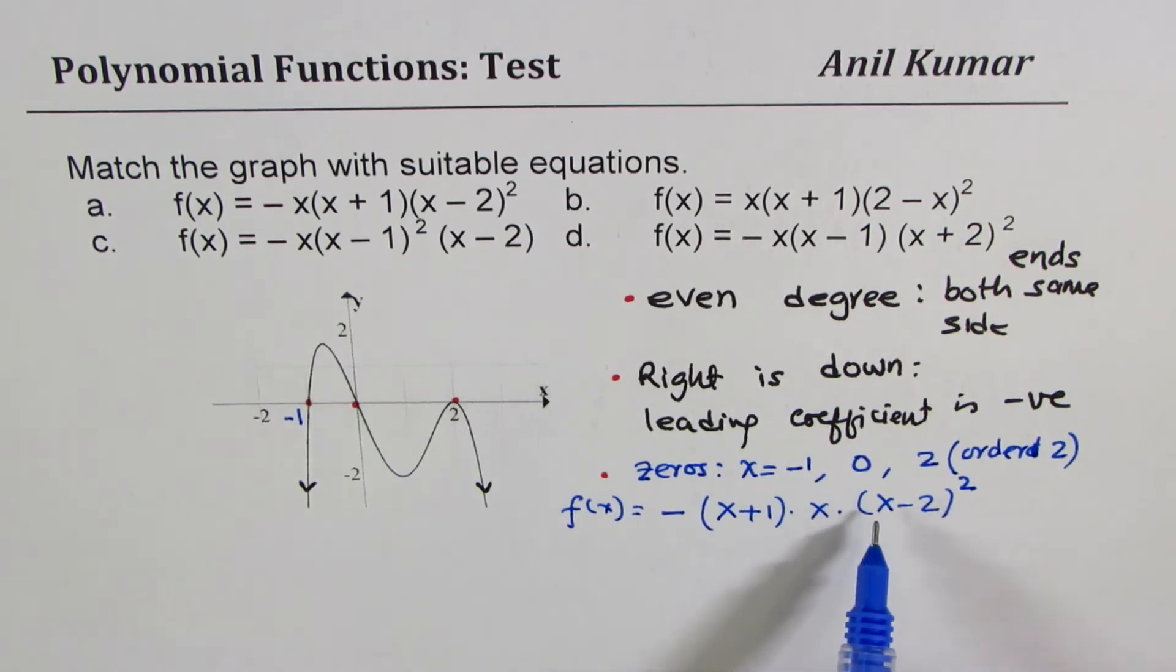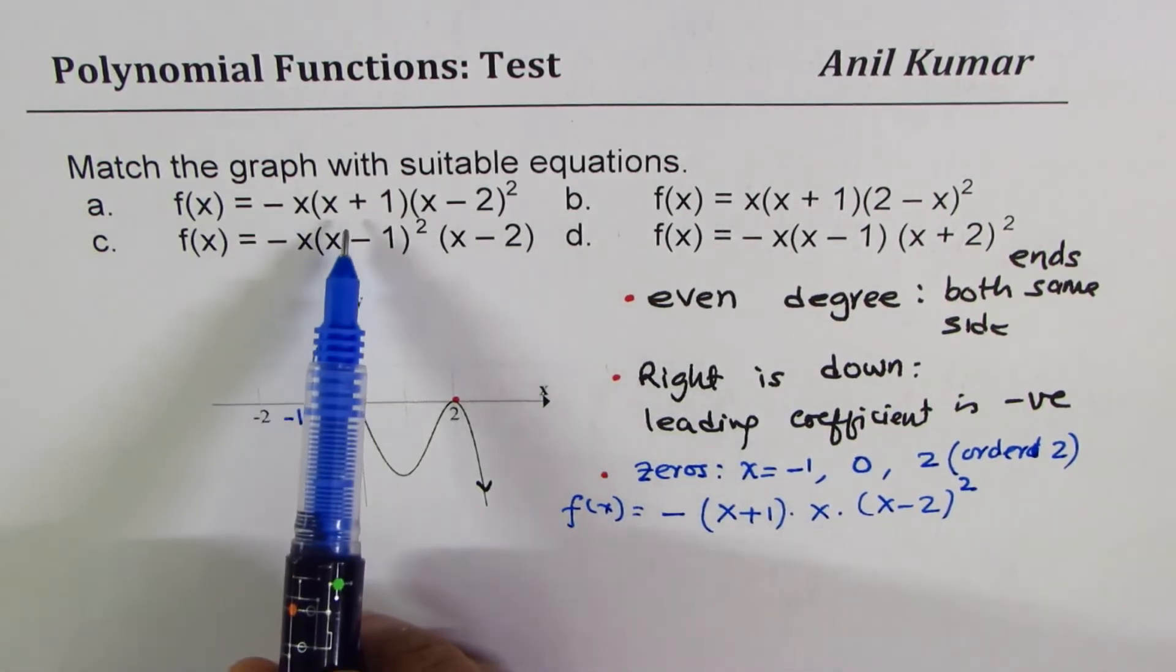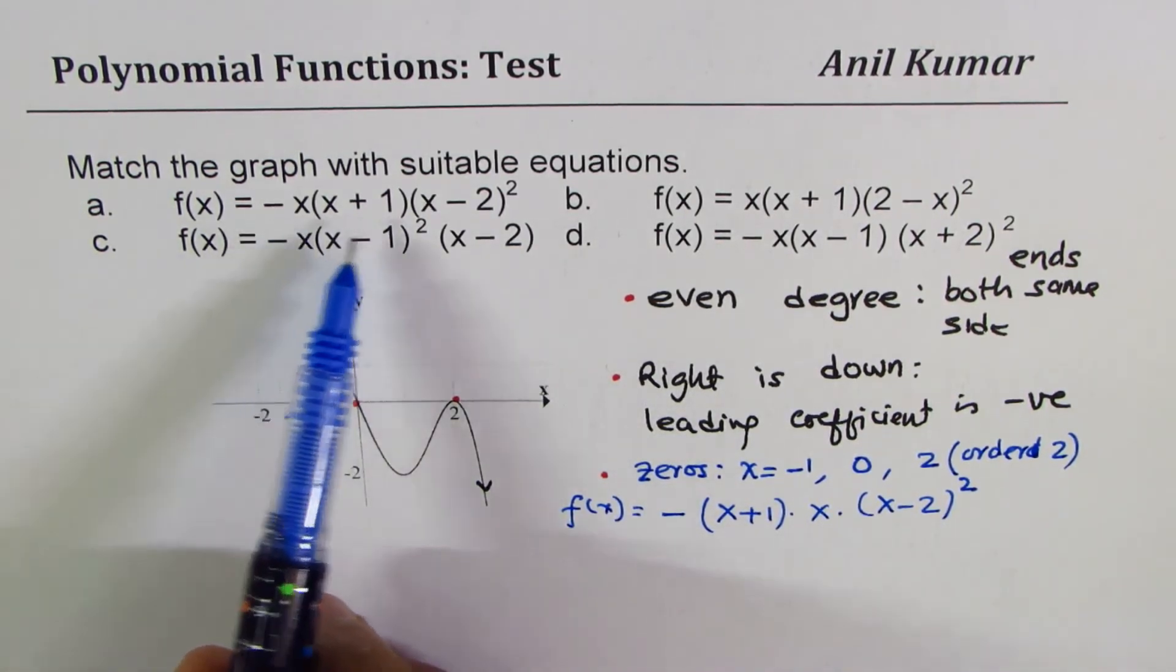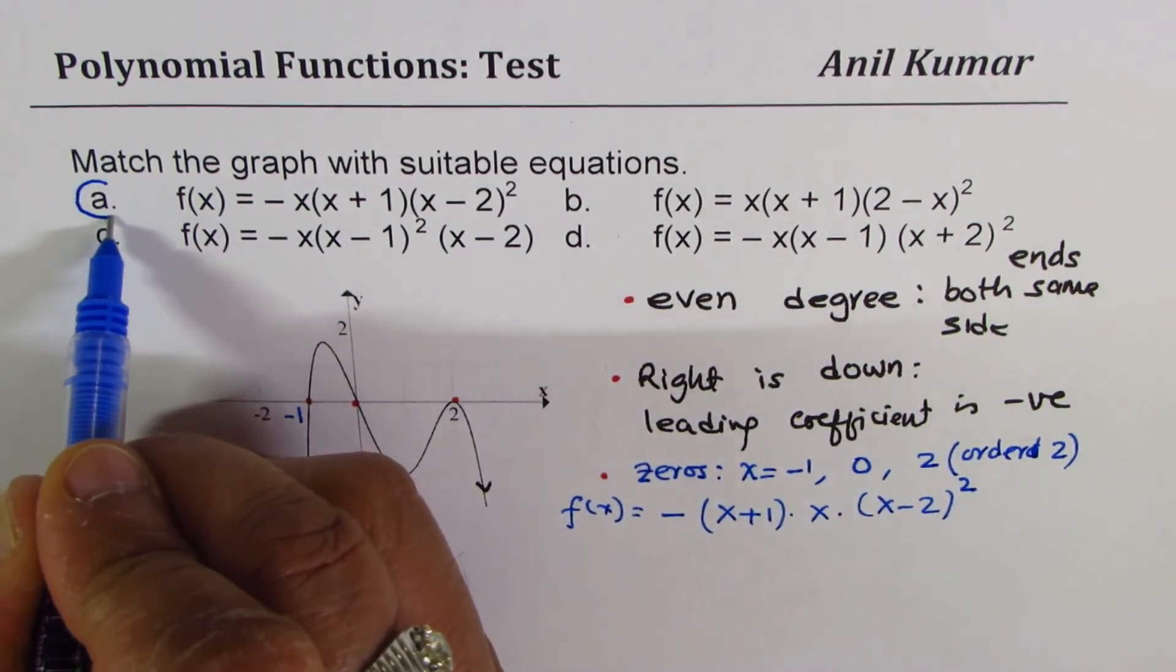So if you compare, what do you get? Which one matches? So we are looking for (x+1) term with -x and (x-2) whole square. A matches.